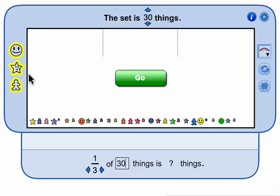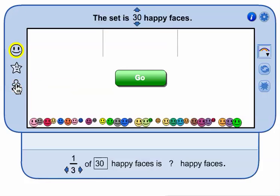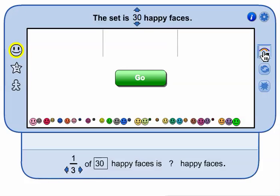Change the type of things. Exclude stars, exclude people, and pick a color.